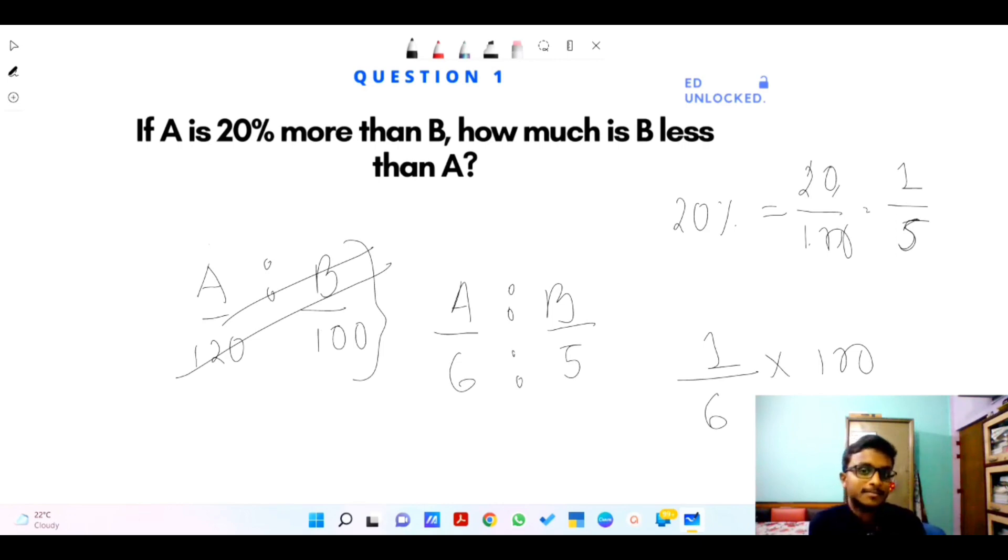If A is 20 percent more than B, B is the base. 20 percent is one by five. One by five, our base is 5. Five plus one will be 6. Six is to five. How much is B less than A?